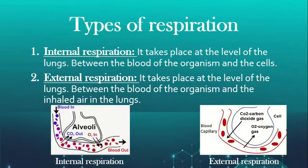Moving to external respiration. It takes place at the level of the lungs, between the blood of the organism and the inhaled air in the lungs, as we can see in the second figure to the right. The cell and the blood capillary — carbon dioxide gas diffusing from the cell to the blood capillary, and oxygen gas diffusing from the blood capillary to the cell.